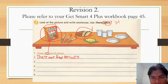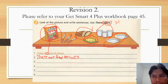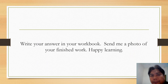Please try to write down for number three, number four, number five, and number six. Write your answers in the space provided. When you send me a photo, I will give you the correct sentences. Do not be afraid to try — just write down, and later I will give you the correct answer. Write your answer in your workbook and send me a photo of your finished work.